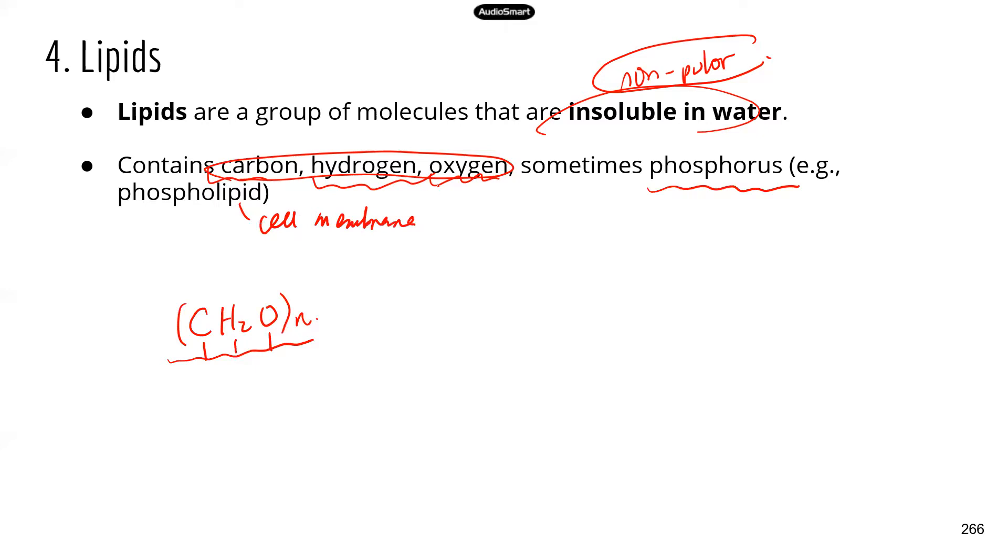So this is one difference between carbohydrates and lipids, because lipids may have phosphorus, which is not present in carbohydrates.